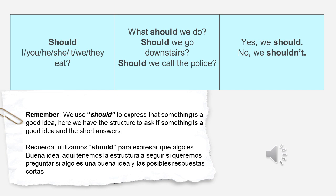For the answer, it can be positive or negative. If it is positive, the answer is going to be 'yes,' then the subject and then 'should.' But if the answer is negative, we are going to use 'no,' then the subject and then 'shouldn't.' For example: 'Yes, we should' or 'No, we shouldn't.'